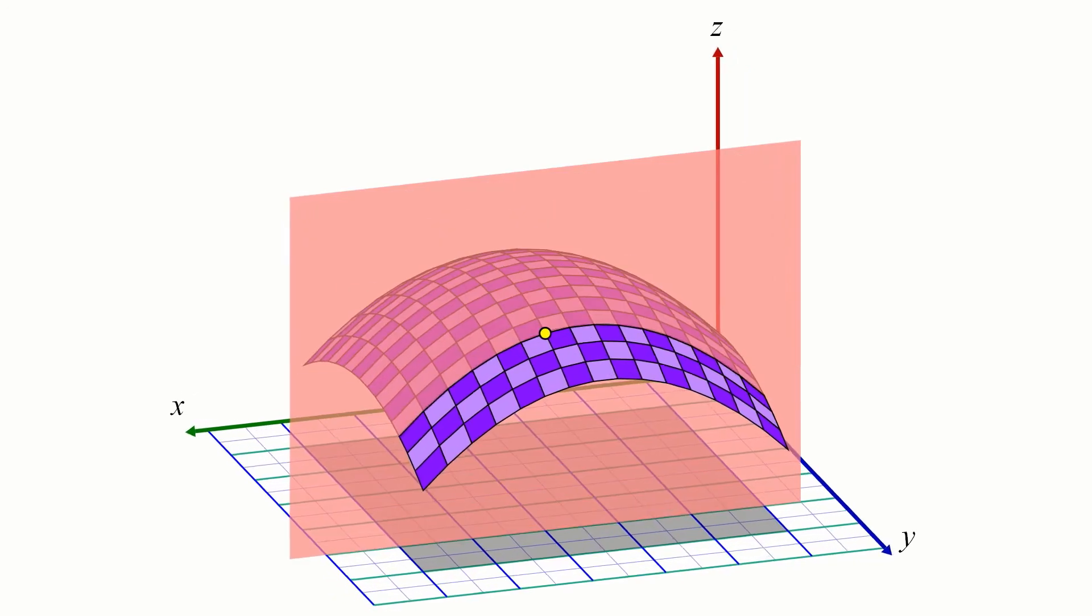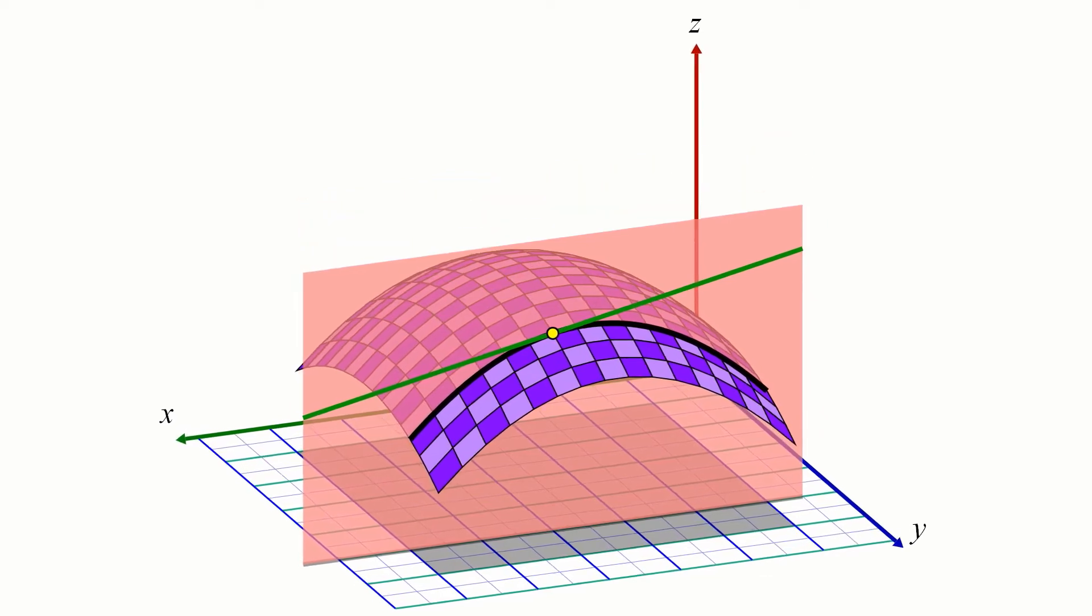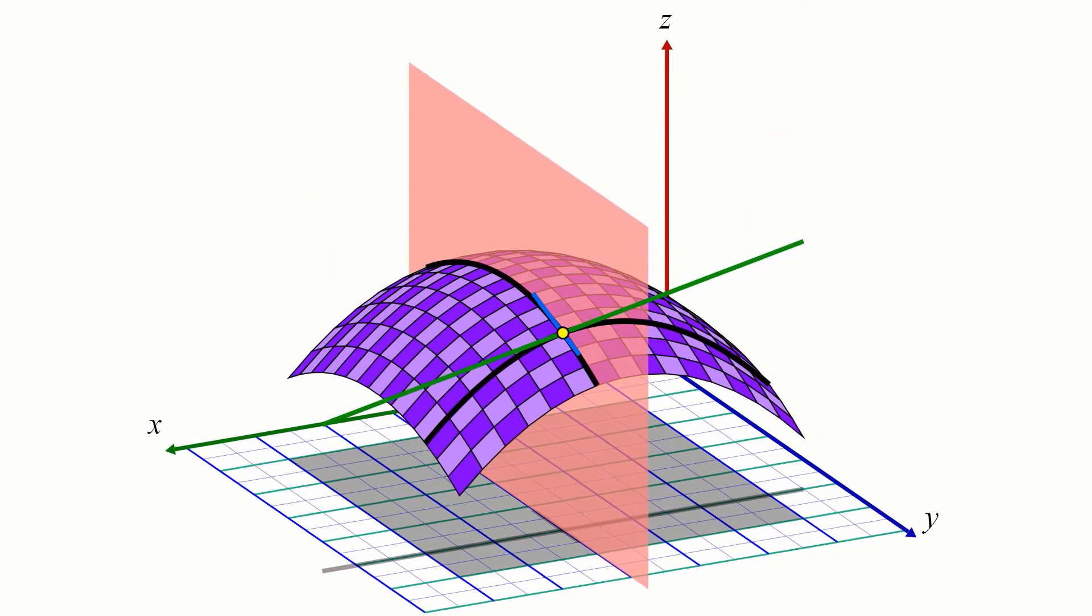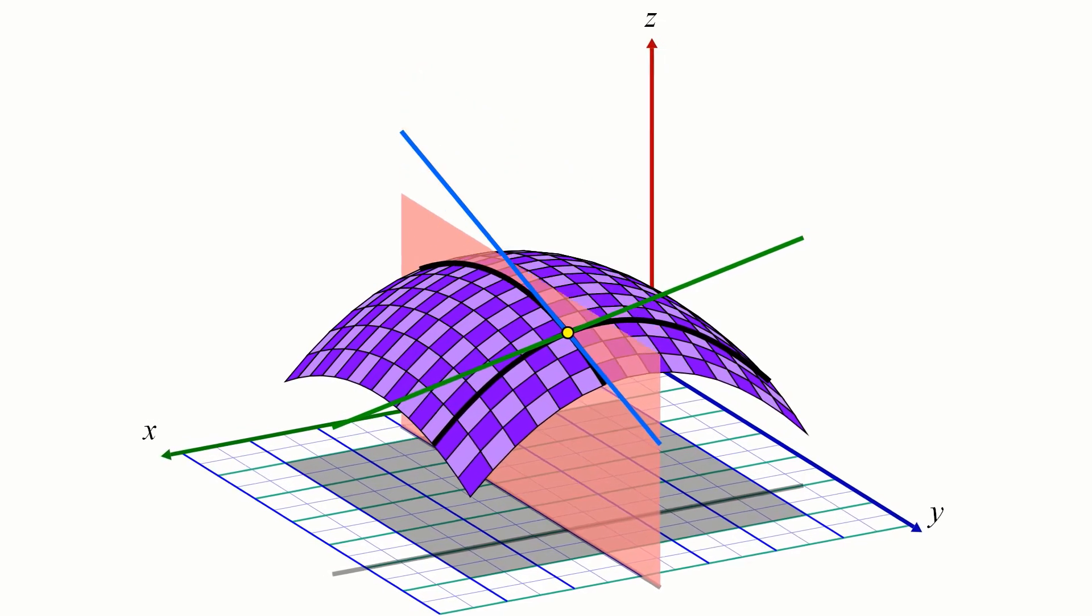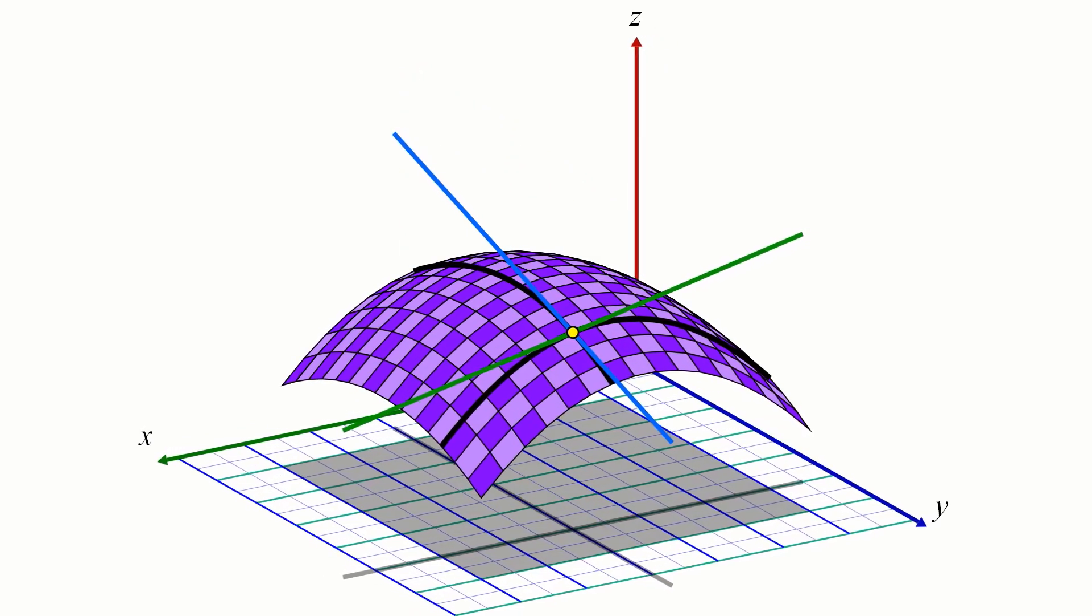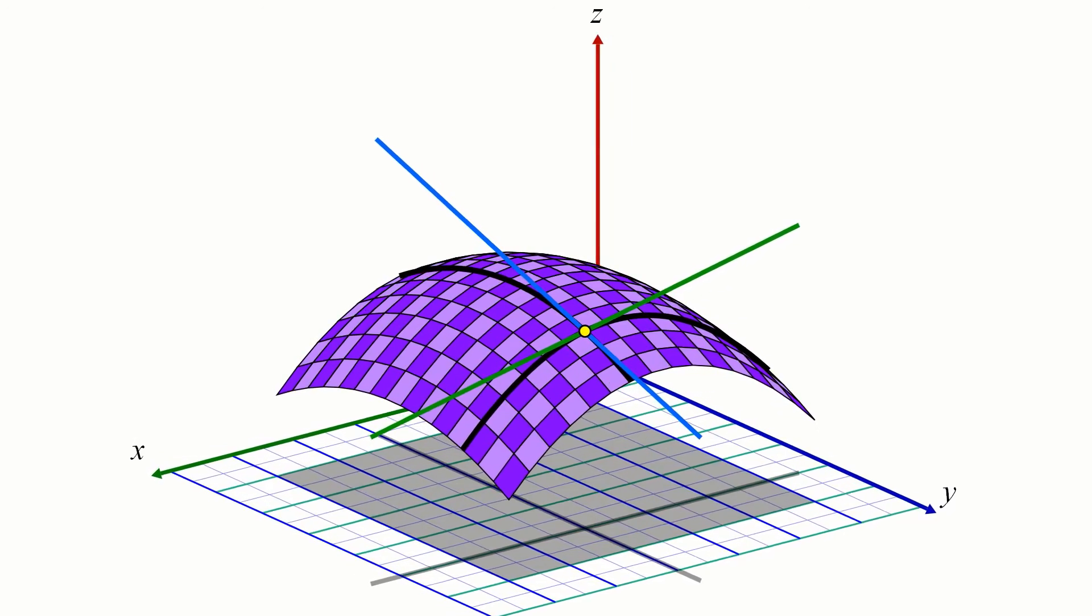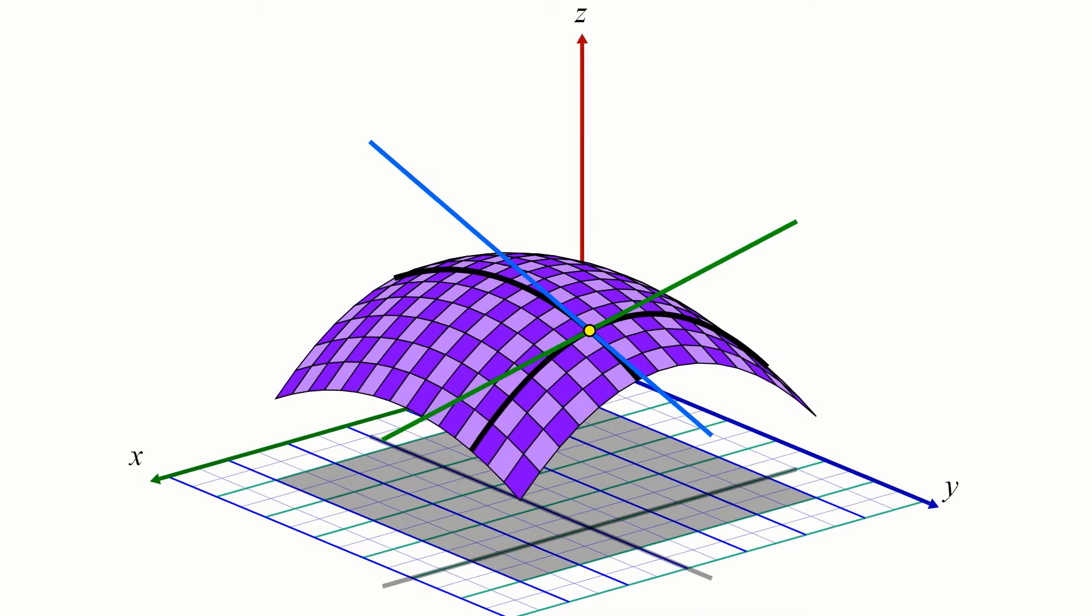We know a surface has two derivatives associated with it: a partial derivative in the x direction, and a partial derivative in the y direction. Taken by themselves, these partial derivatives can only define two separate tangent lines to our surface, but there are two important things to note about them.